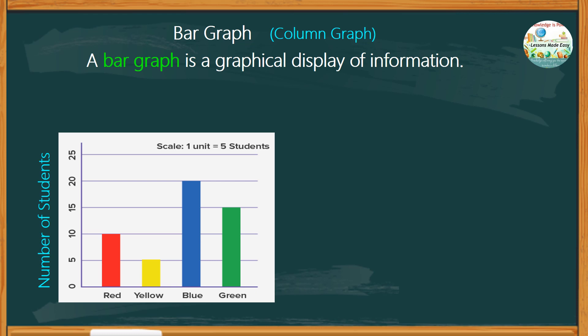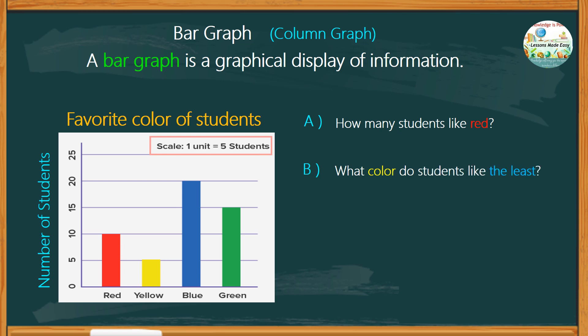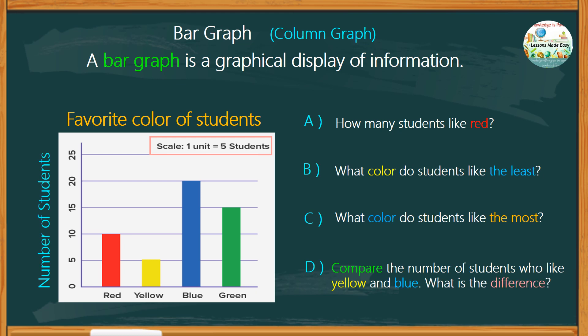Study the bar graph below and answer the guide questions. This graph shows the favorite color of students. Again, remember to take note of the scale. Find out how many students like red. What color do students like the least? What color do students like the most? Then, compare the number of students who like yellow and blue and write down the difference. Take your time to study the graph, but if you are ready, let's go ahead and check your answers.